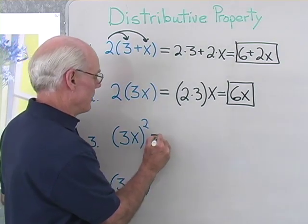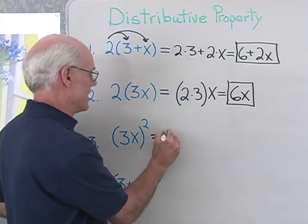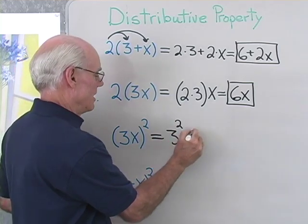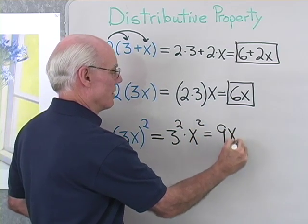Well it turns out that with multiplication, exponents do distribute over products. That is, I can write this as 3 to the second times X to the second, and so I'll get 9X squared for that product.